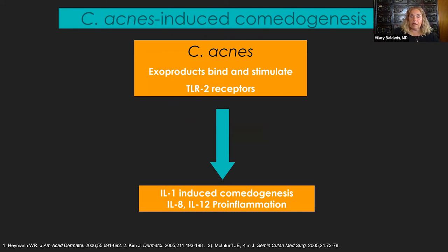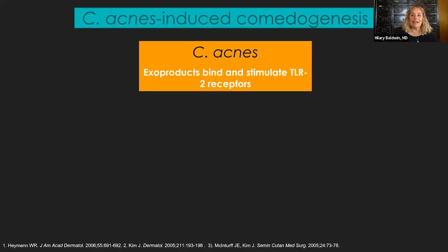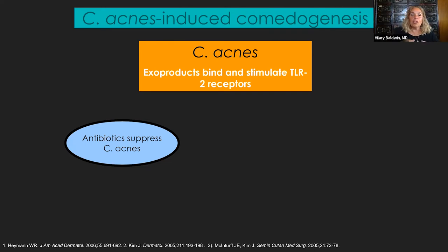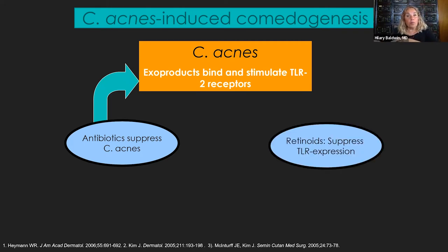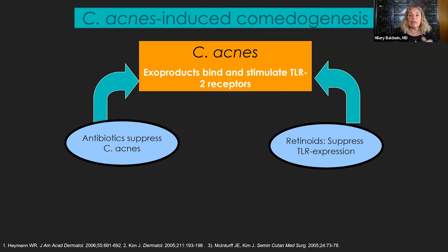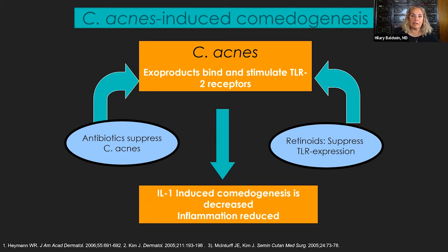We very frequently use combination therapy when treating acne, and this is why. If you use an antibiotic — topical or oral — you're going to suppress C. acnes, so there's less of it to stimulate toll-like receptor 2. But if you add a topical retinoid to suppress toll-like receptor 2 directly, you're suppressing both C. acnes and TLR2 on the surface of keratinocytes and monocytes. Together, they act synergistically to give you an even better reduction of comedogenesis and inflammation.